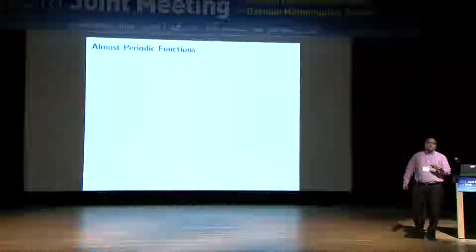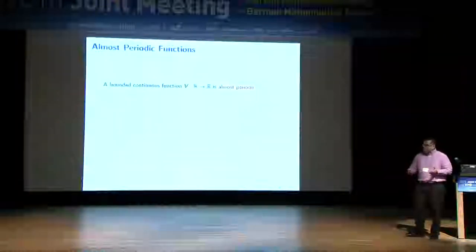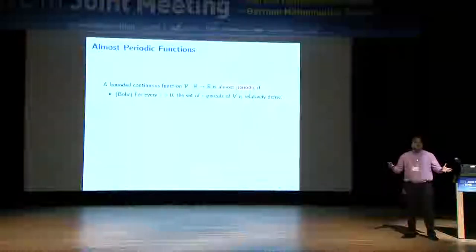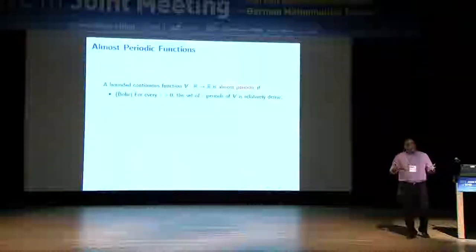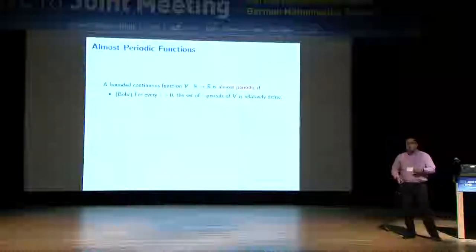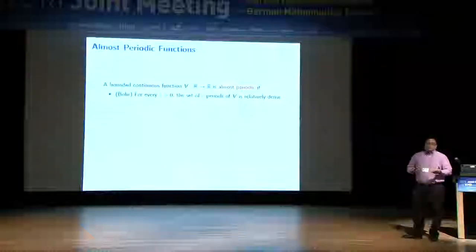Let me recall what almost periodic functions on R are. Bohr's definition explains the terminology. A periodic function is one that if you translate it by a suitable non-trivial amount, you get the same function back. Almost periodicity means that for suitable translates, you get the function almost back — closeness measured in the L-infinity norm, for a relatively dense set of translates.